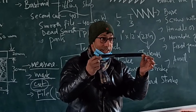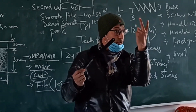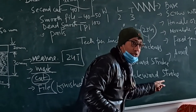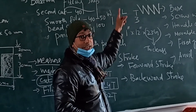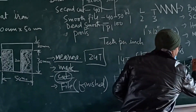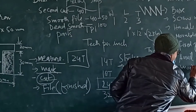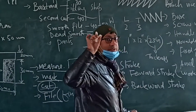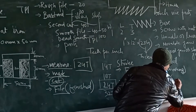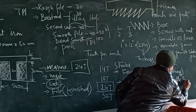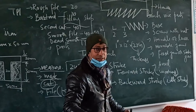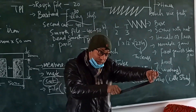So while cutting, we have two strokes. On the forward stroke you are cutting, and you draw the backward stroke. The direction of the teeth is outwards. The forward stroke is called the working stroke — you are cutting only in the forward direction. When you come back in the backward direction, that stroke is called the idle stroke.